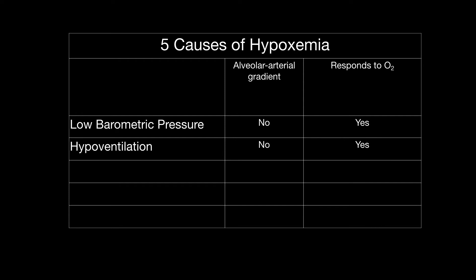Let's think about hypoventilation. Again, there's no alveolar-arterial gradient, because the problem is in the alveoli, not in the transmission across the alveolar capillary unit. In hypoventilation, the CO2 is really high in the alveoli, and because the CO2 is really high, there is less room for oxygen. But if you place the patient on oxygen, the patient will improve because you're changing the fraction of inspired oxygen — there's less nitrogen and more oxygen, which increases the partial pressure of oxygen in the alveoli.